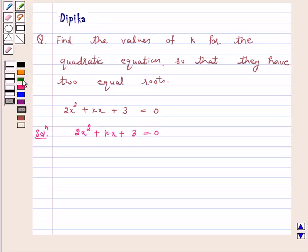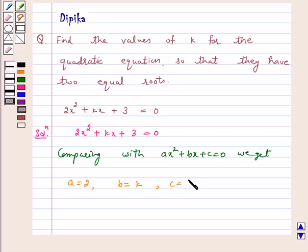On comparing with ax² + bx + c = 0, we get a = 2, b = k, and c = 3.